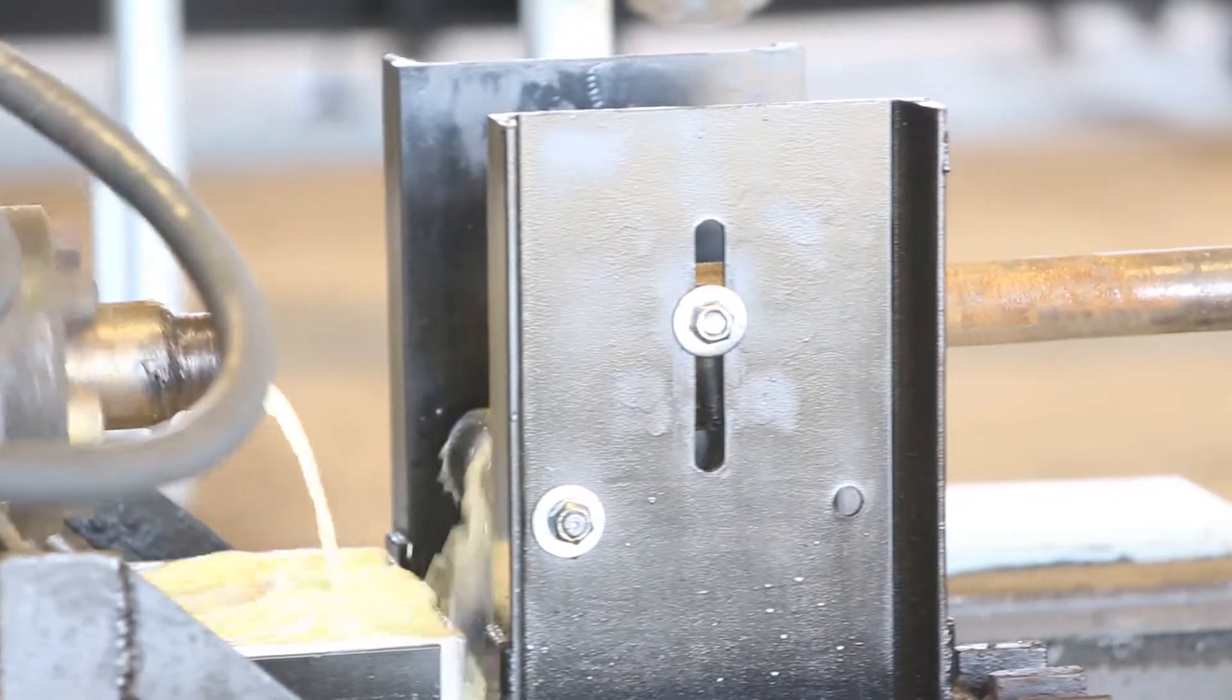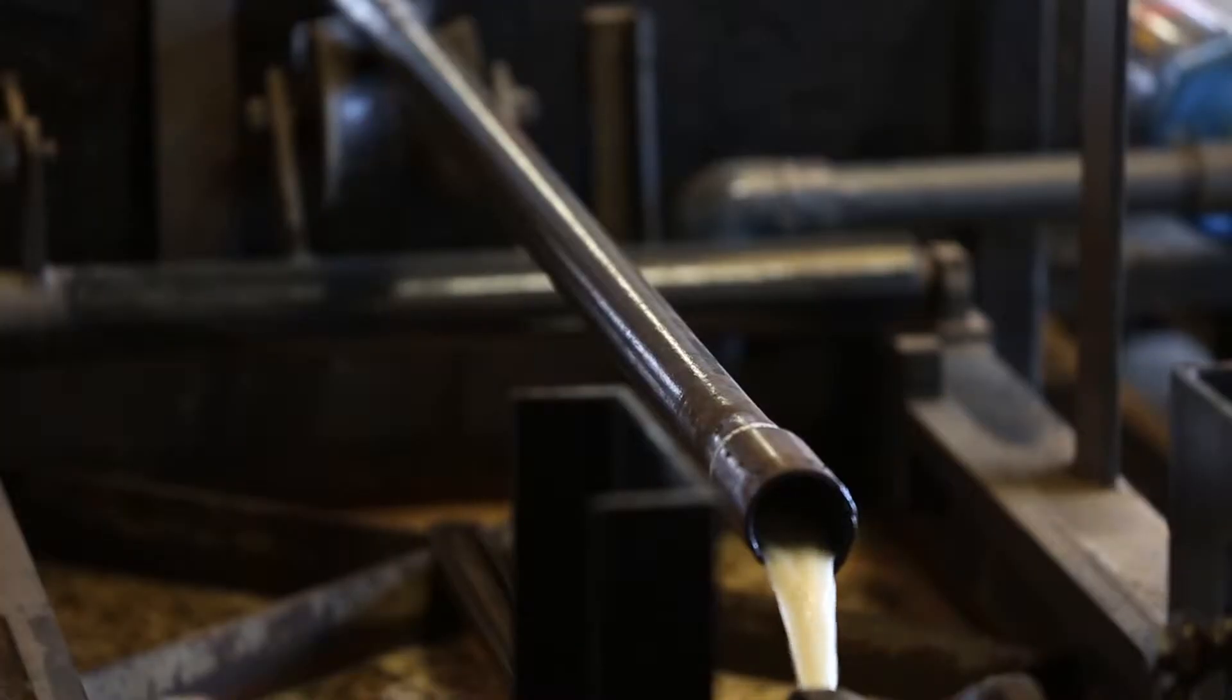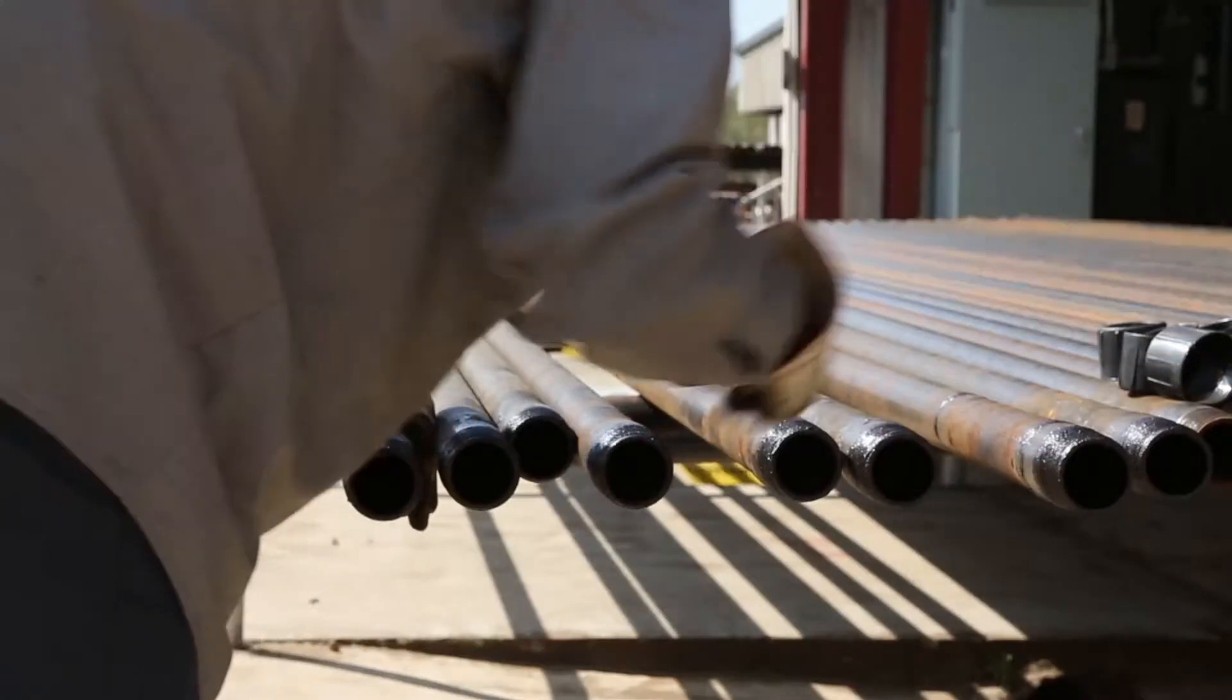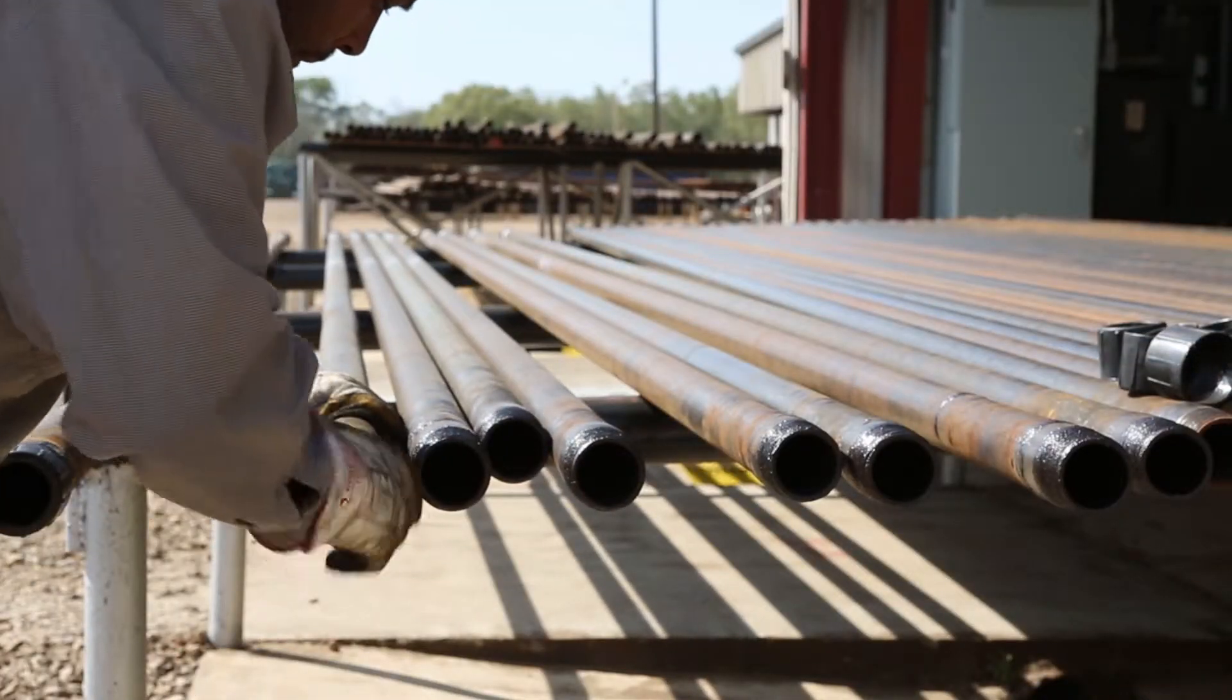Upon successful testing, the tube is rolled down and all connections are re-doped with API modified metal-free thread compound. New hard plastic protectors are installed.